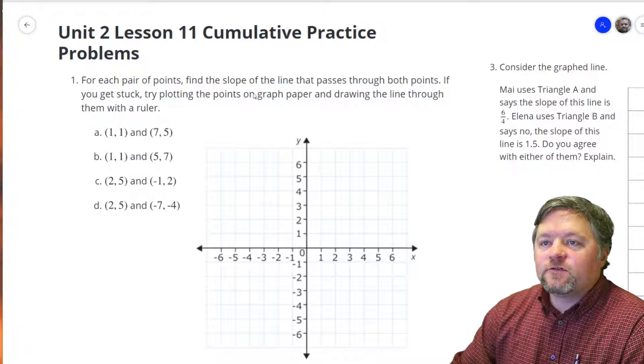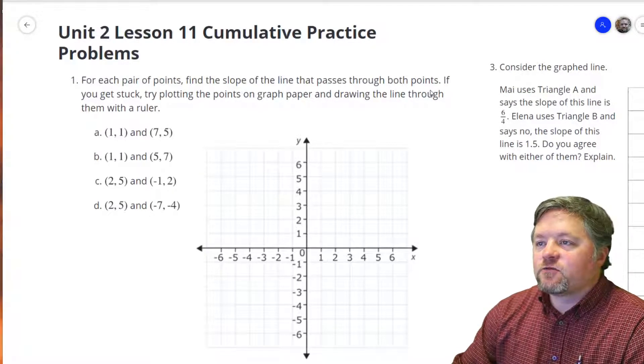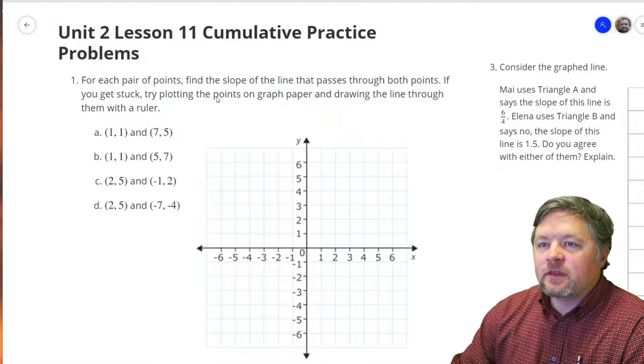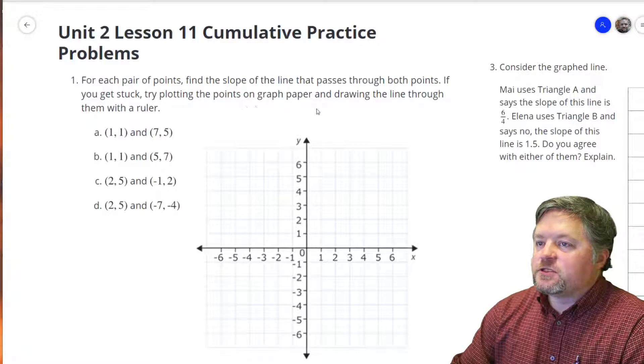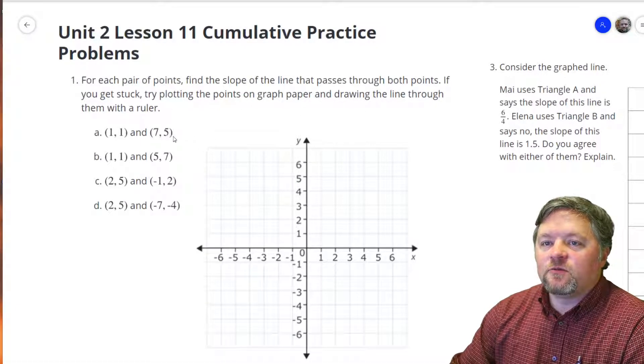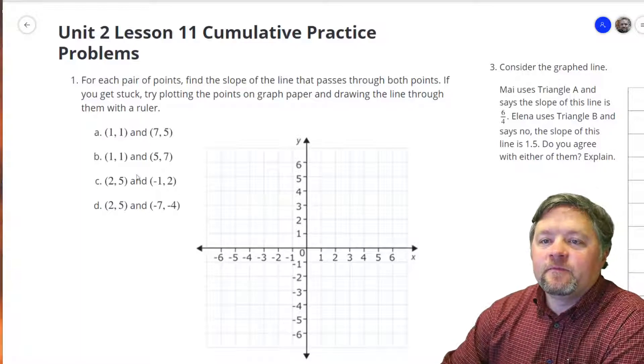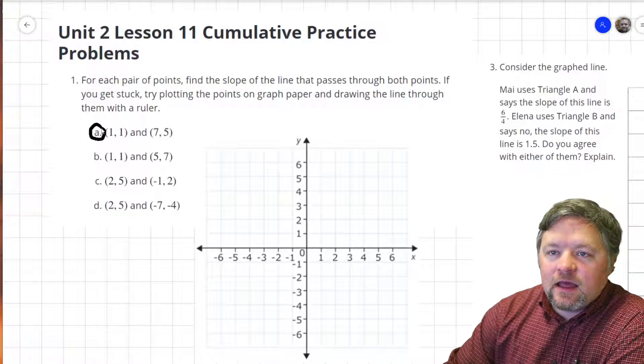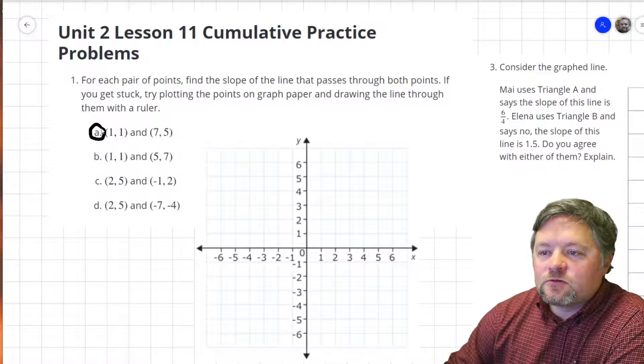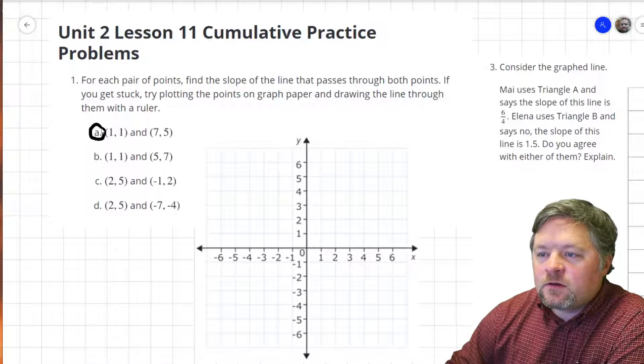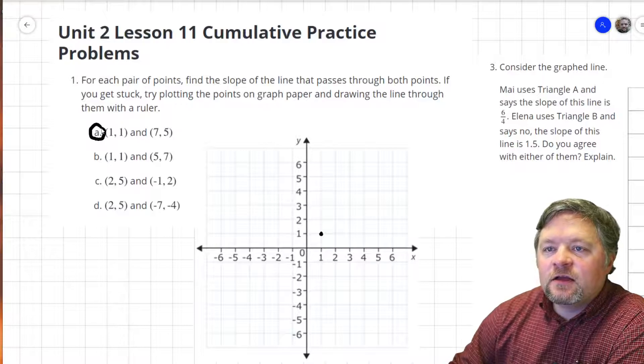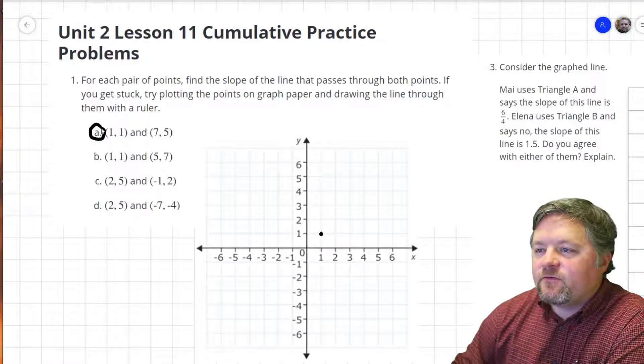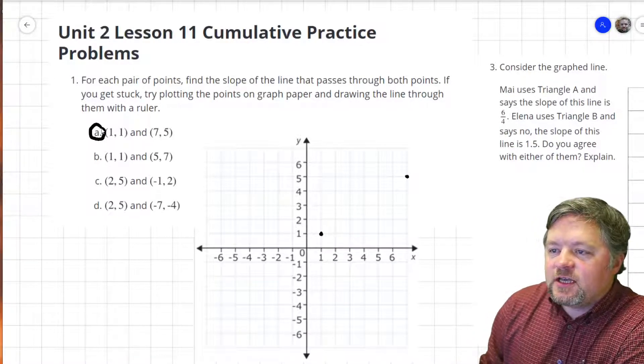Our first problem here. For each pair of points, find the slope of the line that passes through both points. If you get stuck, try plotting the points on graph paper and draw the line through them with a ruler. Our first set of points, A, goes through 1, 1, which is here, and 7, 5, which is here.